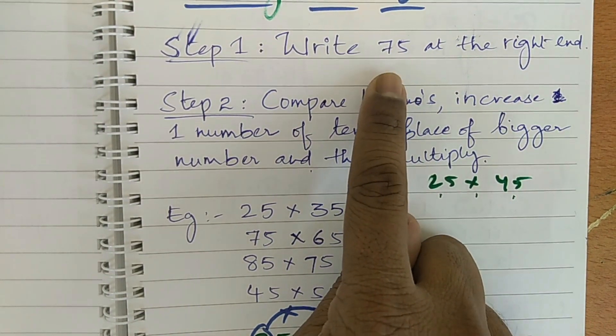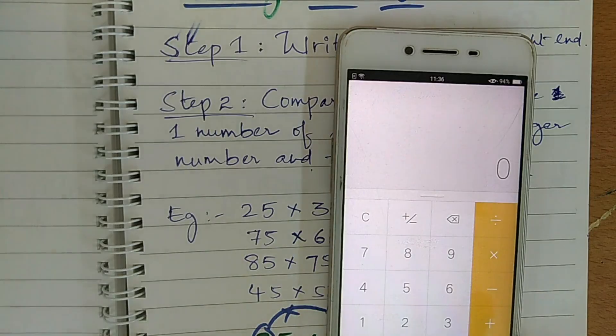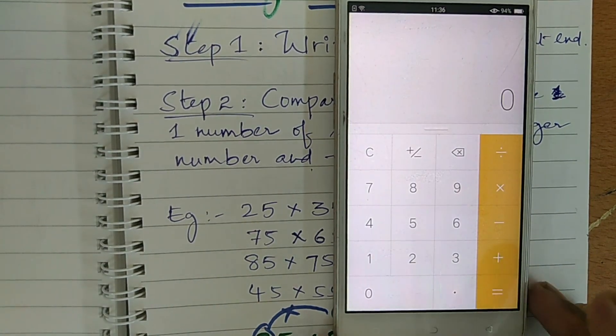So, friends, now I will tell you why I wrote directly, why I have taken here 75 directly. So, here I have a calculator. I will multiply the same numbers here.